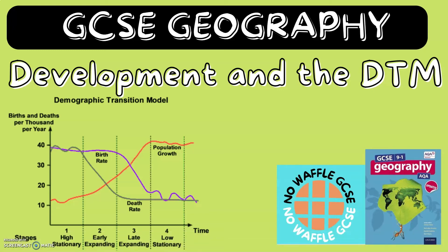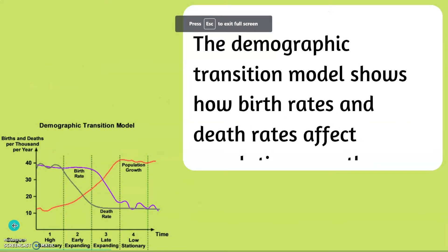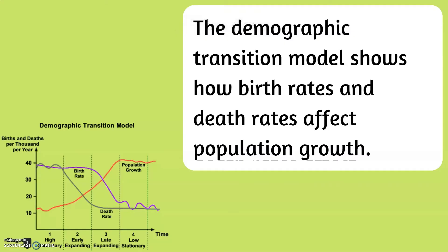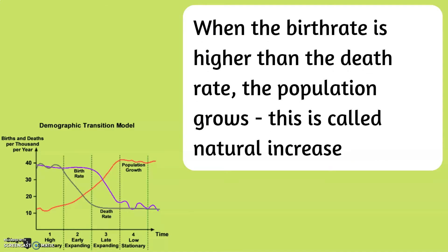GCSE Geography: Development and the Demographic Transition Model. The Demographic Transition Model shows how birth rates and death rates affect population growth, like the graph on the left corner. When the birth rate is higher than the death rate, the population grows. This is called natural increase.